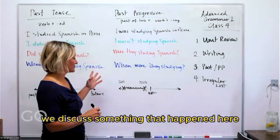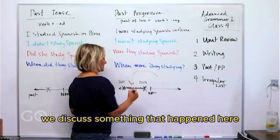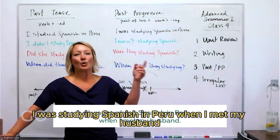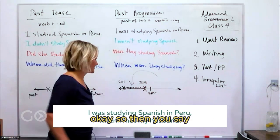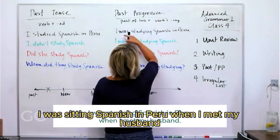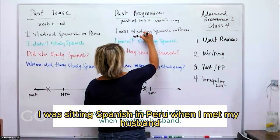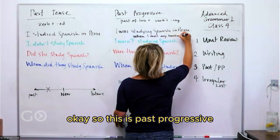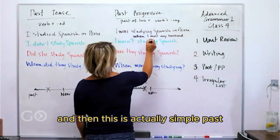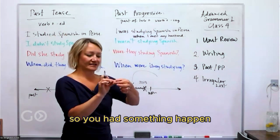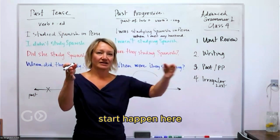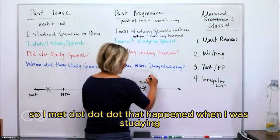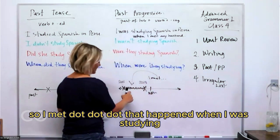Often when we use this tense we discuss something that was ongoing when something else occurred. For example: 'I was studying Spanish in Peru when I met my husband.' So 'was studying' is the past progressive, and 'met' is the simple past — something that happened in the middle of the ongoing action.